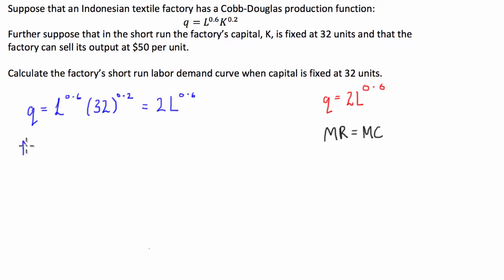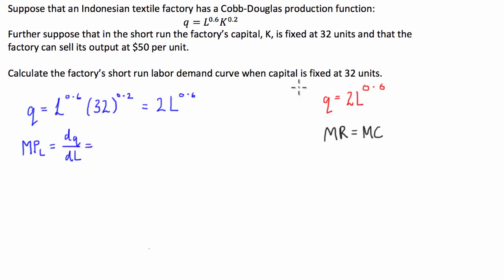To determine this, we need to calculate the marginal product of labour — how much extra output we get per unit of extra labour input. Mathematically, it's the derivative of the quantity of output with respect to labour. Differentiating our function Q = 2L^0.6, we find the marginal product of labour is equal to 1.2L^(-0.4).